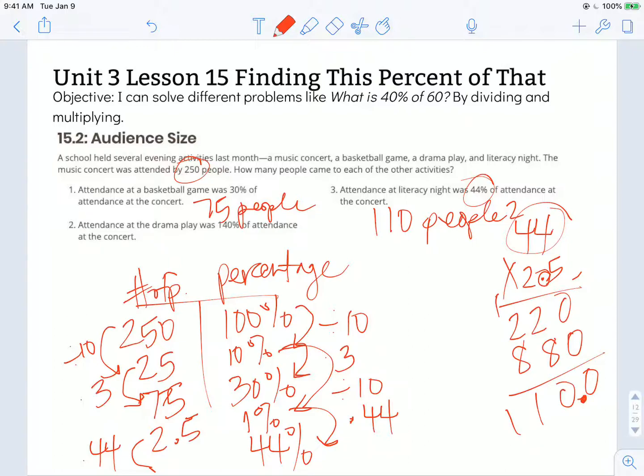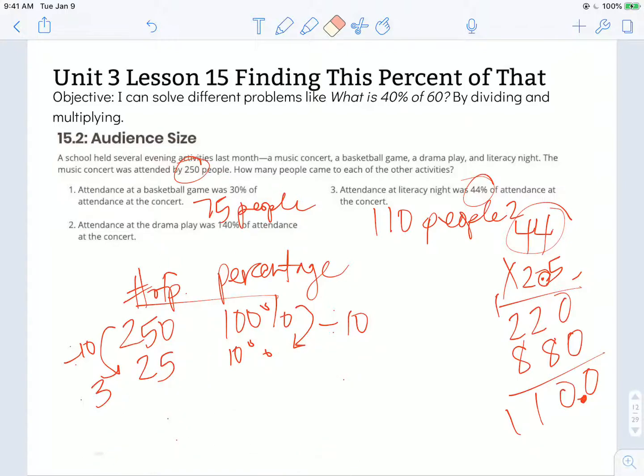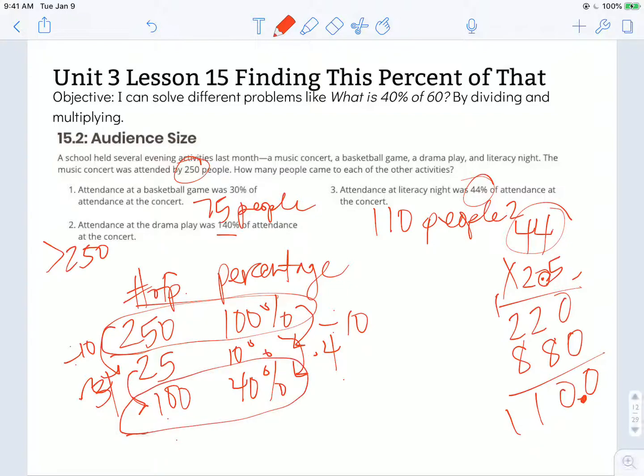Number 2 says attendance at the drama play was 140% of the attendance at the concert. So if there were 140%, there was more than 100 people that were there. So I know that it's going to be greater than 250 people at the drama play. So again, if 100% is 250 and 10% is 25, well if I wanted to get to 40%, I could multiply this by 4. 25 times 4 is 100. So 100% of the people would be 250 people, but there were also another 40% of the people. So I would need to combine those two together. 250 plus 100, there were 350 people at the drama play.